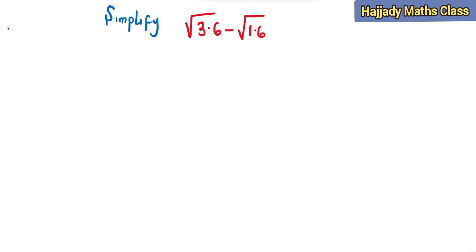Now in simplifying this we need to convert this to fraction, likewise this. So from here now we have square root 36 over 10 minus root 16 over 10.